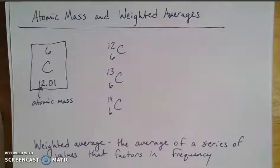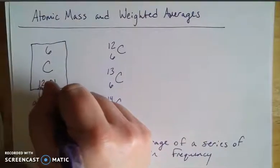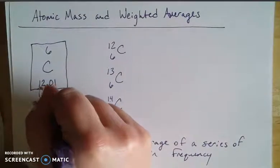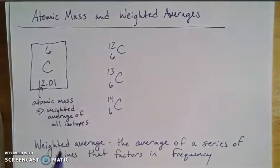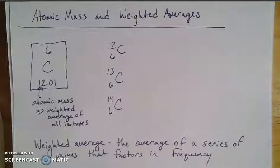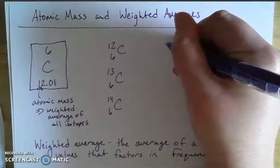This atomic mass is actually a weighted average of all the isotopes of this particular element. The prefix 'iso' means the same, like an isosceles triangle, so isotope means it's the same element but has a different mass. Most of the mass of an atom comes from its nucleus — the protons and neutrons — so one atomic mass unit equals one proton or one neutron. The atomic mass is a weighted average, while the mass number is a count of the total number of nucleons.